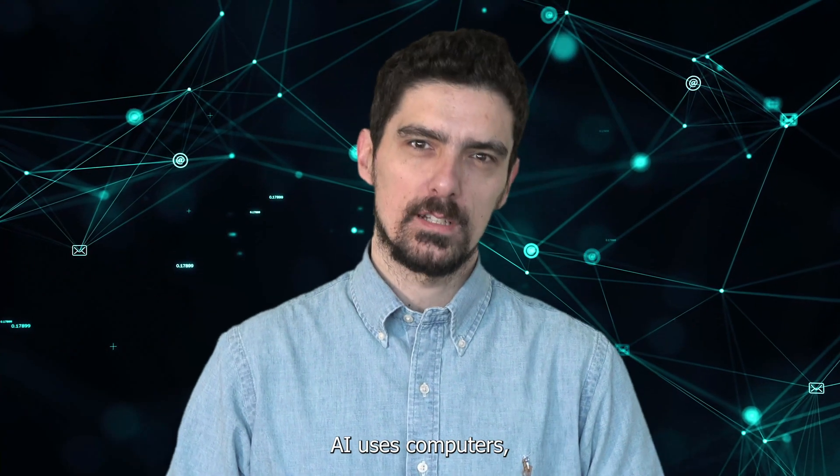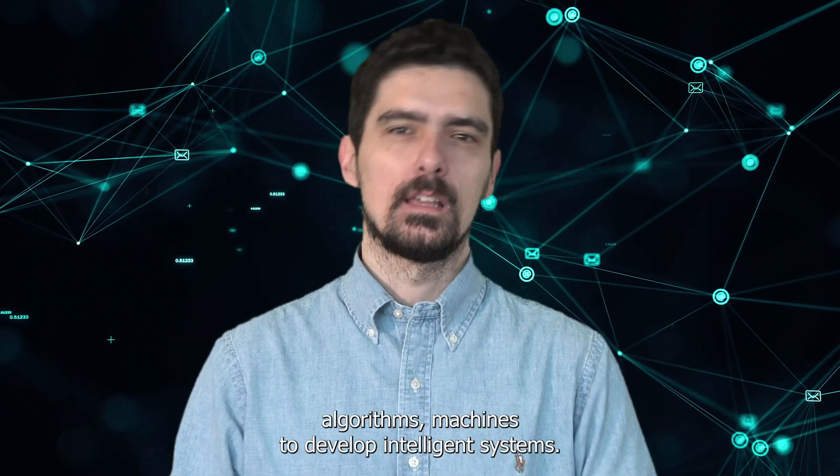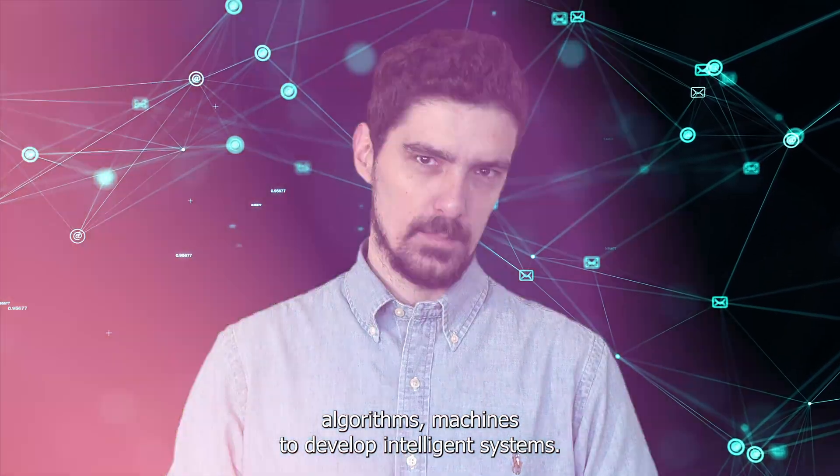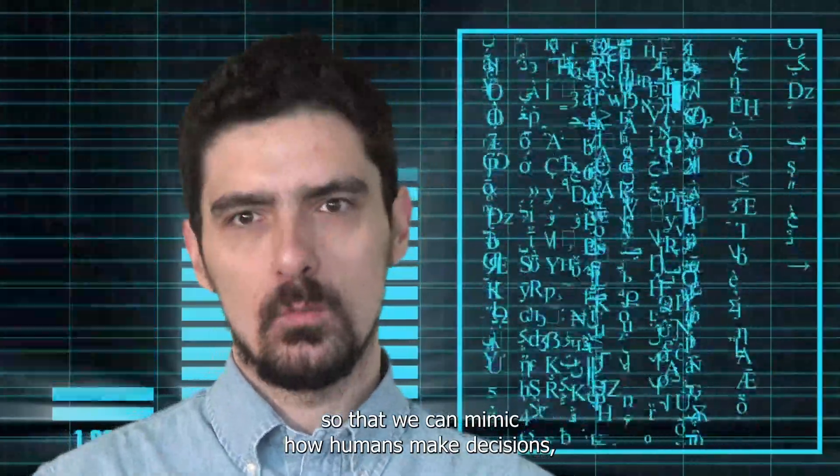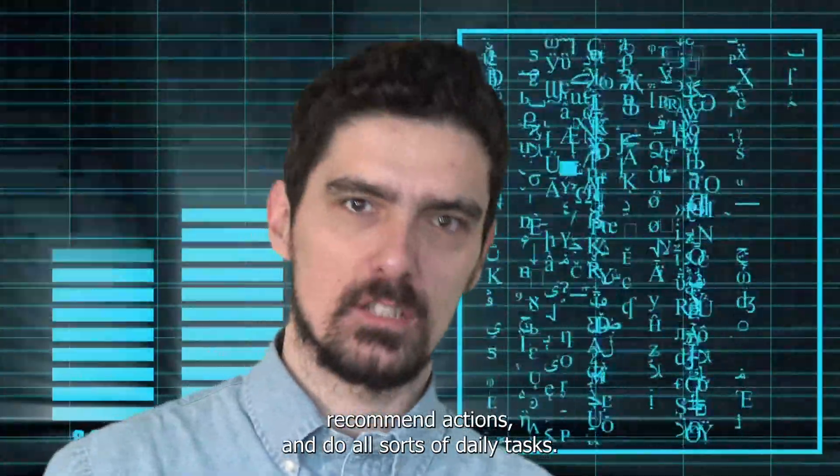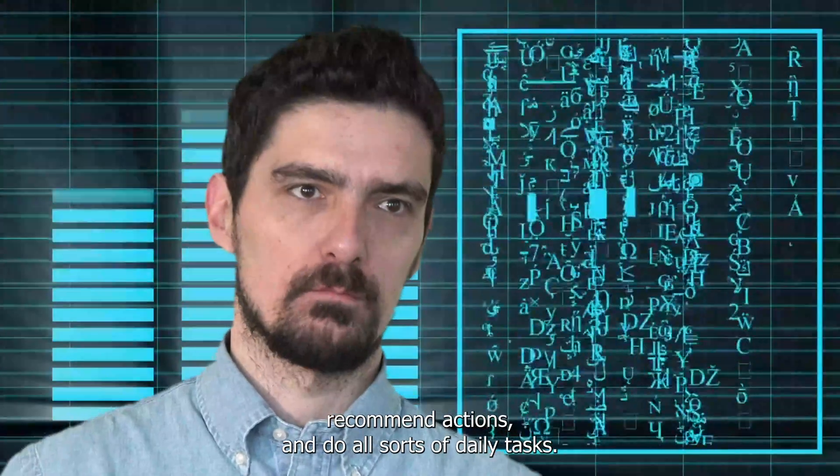AI uses computers, algorithms, and machines to develop intelligent systems. We do that by training algorithms with large amounts of data so that we can mimic how humans make decisions, recommend actions, and do all sorts of daily tasks.